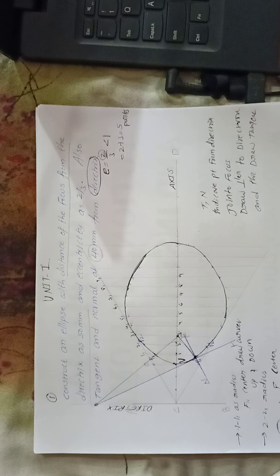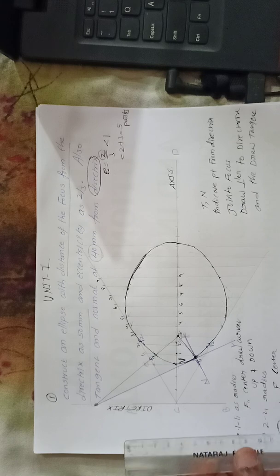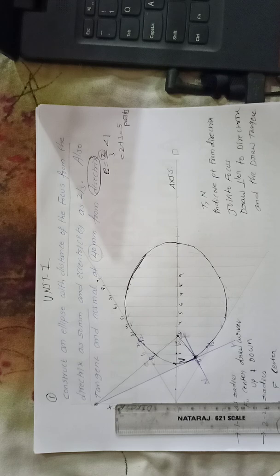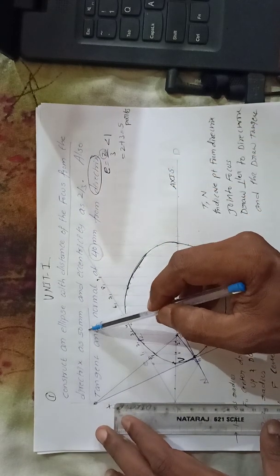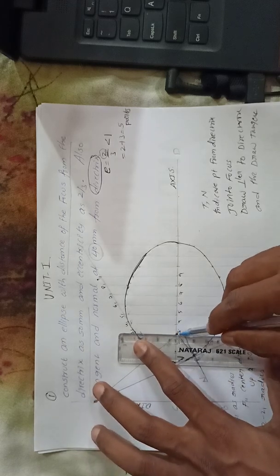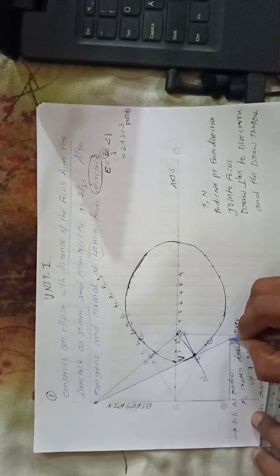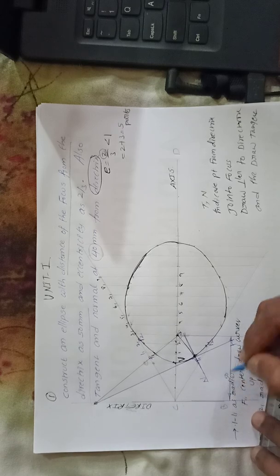After indicating all the points, don't forget to show the dimensions — only then will you get full marks. You have to indicate the given dimensions from the problem. The dimension given is 50, which is the distance from the directrix to the focus. Show this dimension outside the figure.